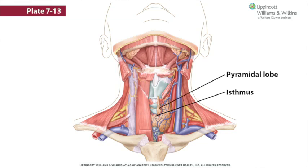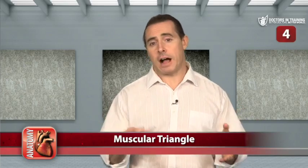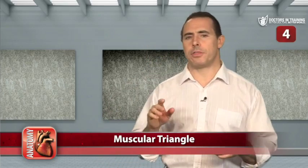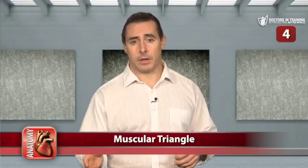Often, a pyramidal lobe will ascend from the lateral end of the isthmus. The gland secretes thyroxin (T4) and triiodothyronine (T3), which are essential in the regulation of metabolism.